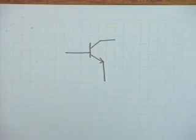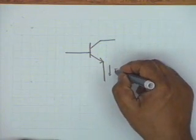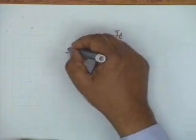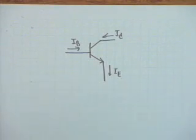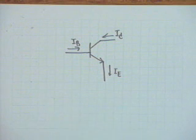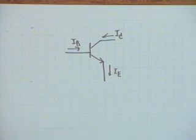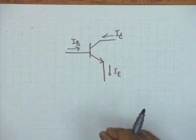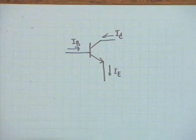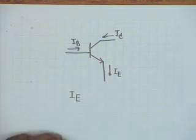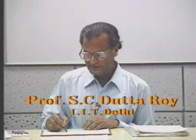We are considering an NPN transistor, and the currents are I_E, I_C, and I_B. These are the actual directions of currents — the base, collector, and emitter. The base-emitter junction is forward biased and the collector-base junction is reverse biased. One of the basic relations is that the emitter current is the sum of the collector current and the base current.